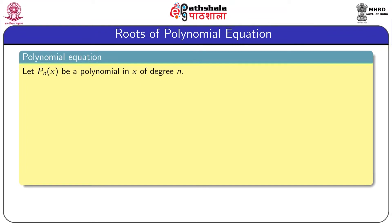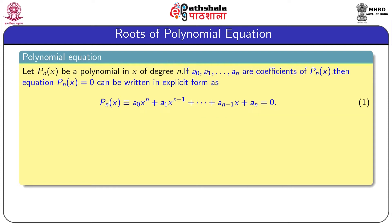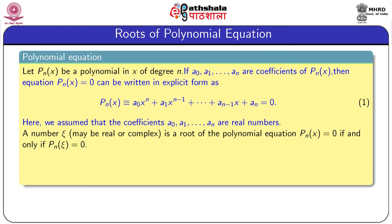We define a polynomial equation. Let P_n(x) be a polynomial in x of degree n, and a_0, a_1, up to a_n are the coefficients. Then the equation P_n(x) = 0 can be written as a_0·x^n + a_1·x^(n-1) + ... + a_(n-1)·x + a_n = 0. This is the polynomial equation of degree n. We assume all coefficients a_0 to a_n are real numbers. A number ψ — real or complex — is a root if and only if P_n(ψ) = 0. Every polynomial of degree n has exactly n roots.